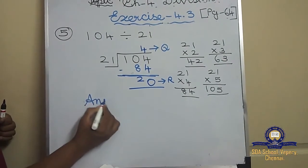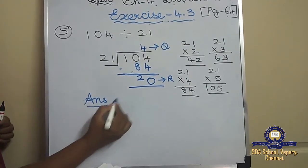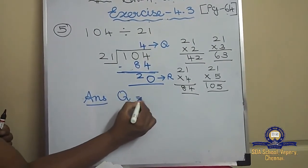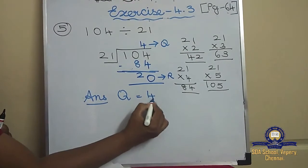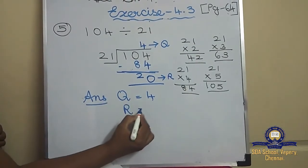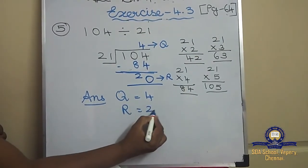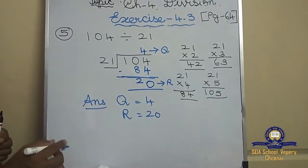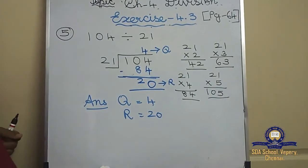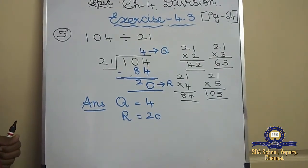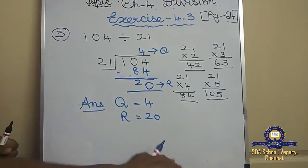Write the answer: quotient is 4 and the remainder is 20. We will move on to the sixth sum.